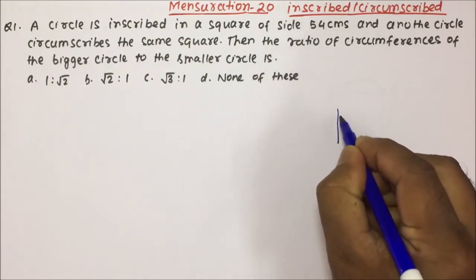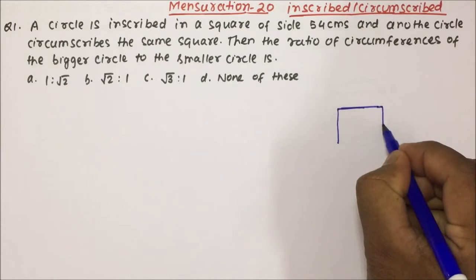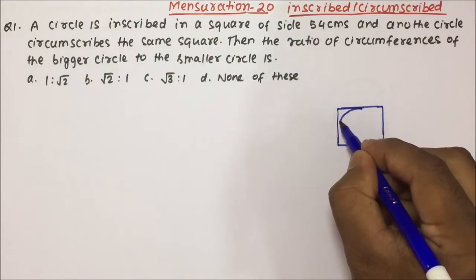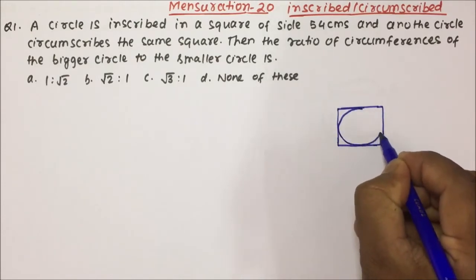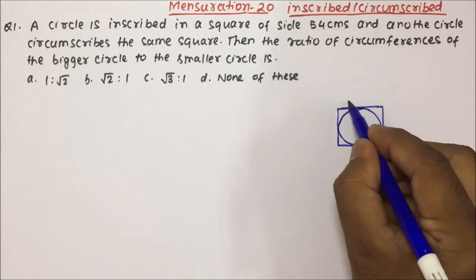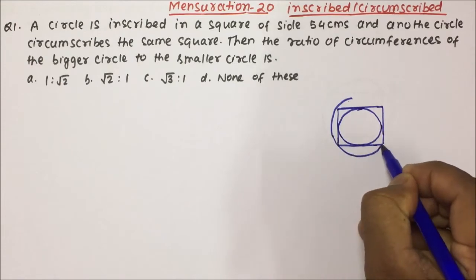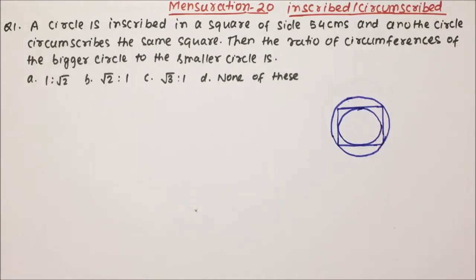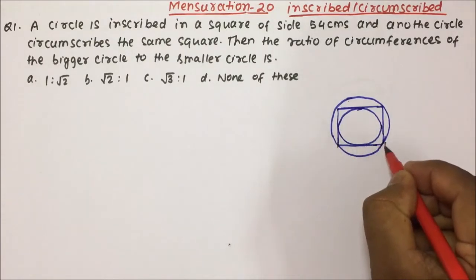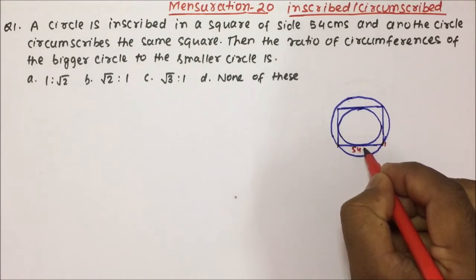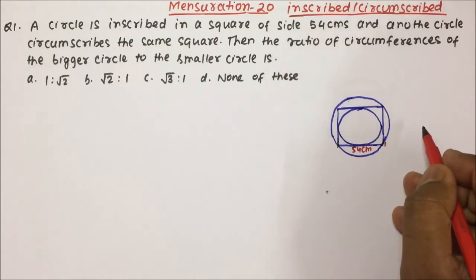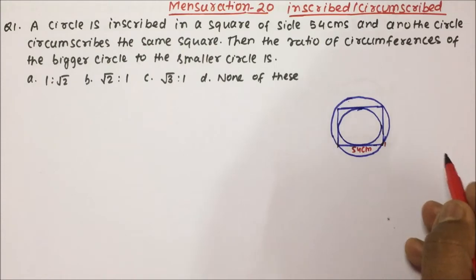So friends, you have a square here — all 4 sides will be equal — and there is one circle inside, something like that. And one circle outside, something like that. So one is inscribed and one is circumscribed. A circle is inscribed in a square of side 54 cm, so all 4 sides of the square are equal — 54 cm each. And another circle circumscribes the same square. We need to find the ratio of circumferences of the bigger circle to the smaller circle.